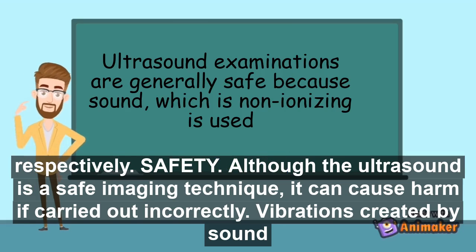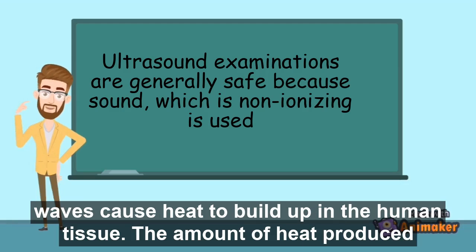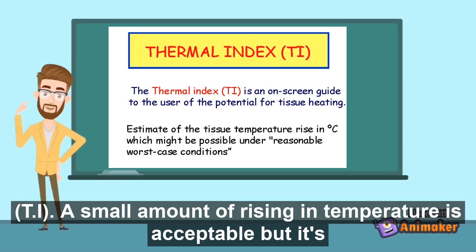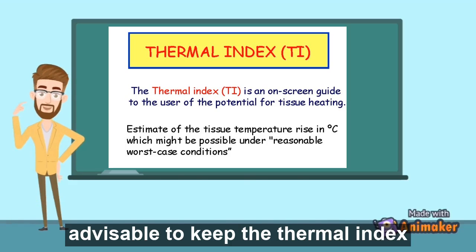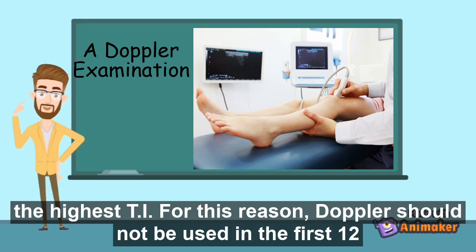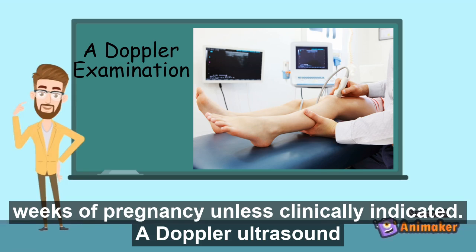Safety. Although ultrasound imaging is a safe and effective imaging technique, it can cause harm if carried out incorrectly. Vibrations created by sound waves cause heat to build up in human tissue. The amount of heat produced is calculated by the ultrasound machine and is called the thermal index. A small rise in temperature is acceptable, but it is advisable to keep the thermal index below 1 at all times. Doppler sonography uses a pulse signal which creates high amounts of heat and has the highest thermal index. For this reason, Doppler should not be used in the first 12 weeks of pregnancy unless clinically indicated.